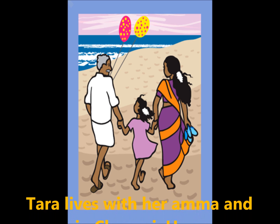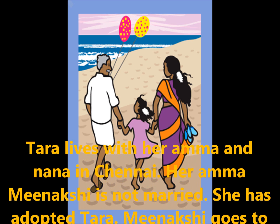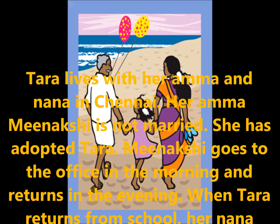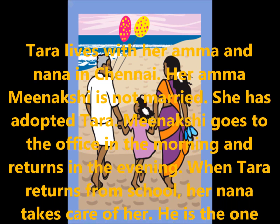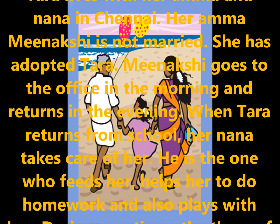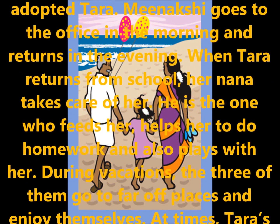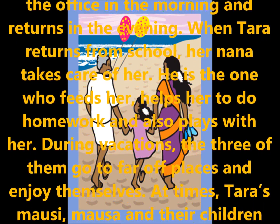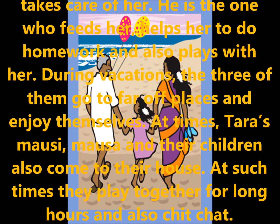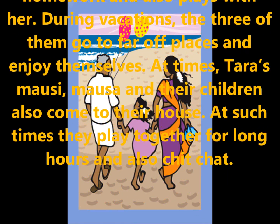Next, we are going to see Tara's family. Tara lives with her amma and nana in Chennai. Her amma, Meenakshi, is not married — she adopted Tara. Meenakshi goes to the office in the morning and returns in the evening. When Tara returns from school, her nana takes care of her. He feeds her, helps her do homework, and also plays with her. During vacations, the three of them go to far-off places and enjoy themselves.